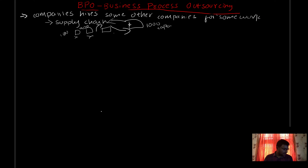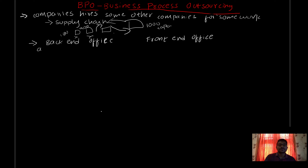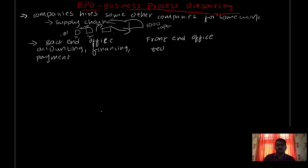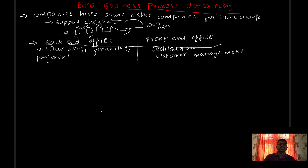What are the BPO types? BPO has two categories: back-end office and front-end office. Back-end office handles back-end-related stuff such as accounting, financing, and payment management. In the front-end office, it handles technical support and customer management.